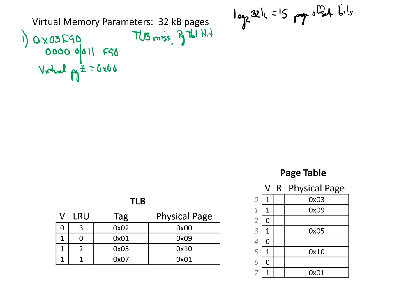We then look to figure out the physical address. The physical page number was 3, so we put in binary 3. Then we append all of the page offset bits — 0, 1, 1 — and then the F90 we had before. When we break this up into hex, we find a final physical address of 0x1BF90. And in a real system, we'd also want to bring this entry into our TLB.